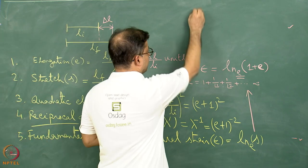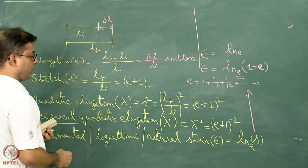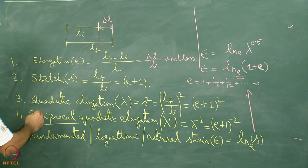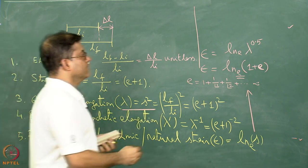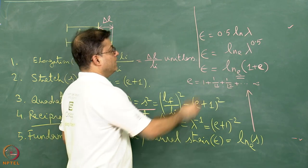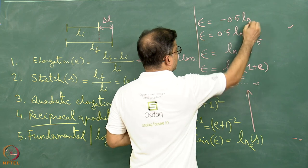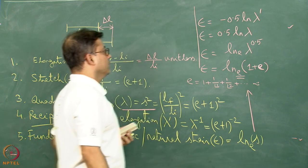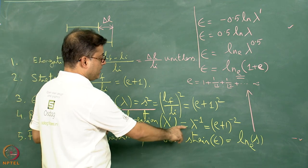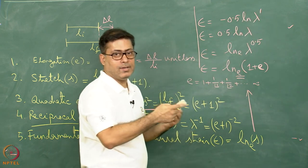Epsilon can also be written as ln(lambda^0.5), or equivalently as minus 0.5 times ln(lambda dash). The minus sign appears because lambda dash is the reciprocal of lambda, so introducing lambda dash brings in a power of minus 1, which gives the negative sign.